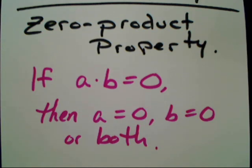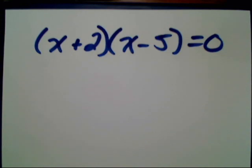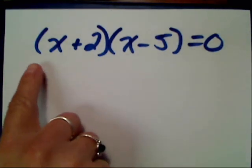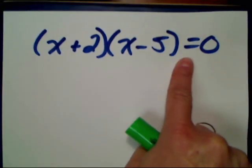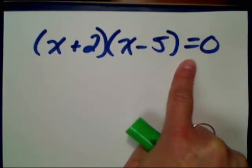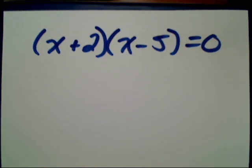Let's see this with variables. Say I have: (x + 2) times (x − 5) equals zero. My expression on the left side is already in factored form — it's being multiplied together and set equal to zero. This is different than what we did before because there's an equal sign, making this an equation. It's now a balance. What we did before was simplifying expressions.